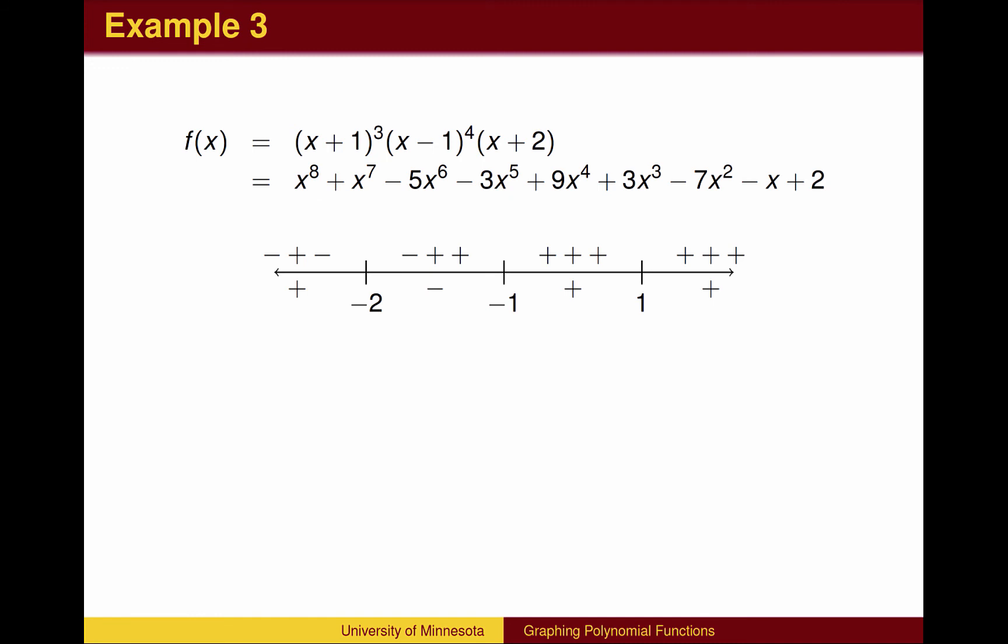As we move to the left of -2, the factor x + 2 changes sign, and we cross back above the x-axis. We sketch the graph, beginning above the x-axis on the left, crossing at -2, and again at -1, passing through the y-intercept of 2, returning to the x-intercept of 1, but staying positive to the right.